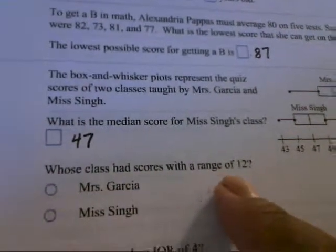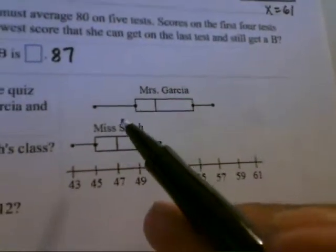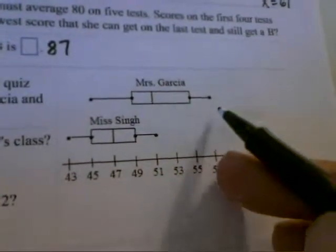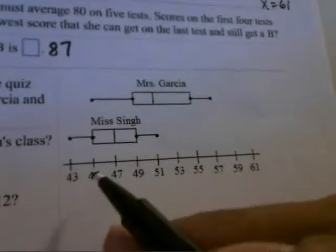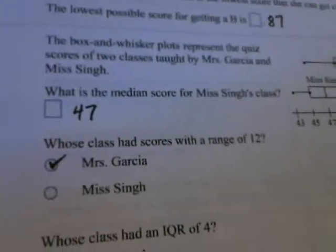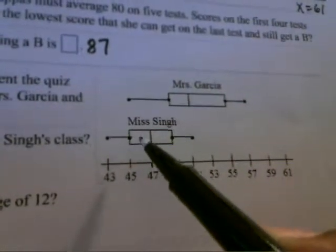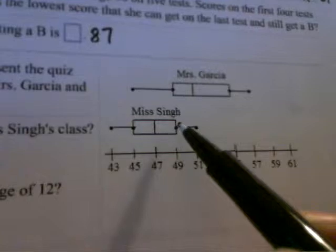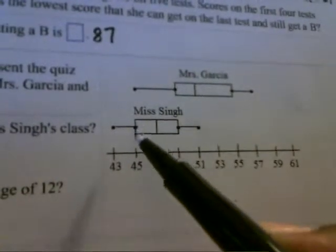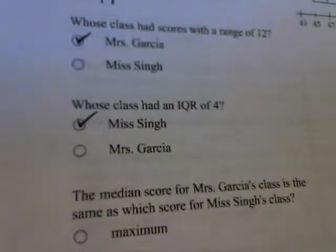Whose class has a score with a range of 12? It will be Ms. Garcia, because the lowest number is 45 and the highest is 57. 57 minus 45 gives 12, so it's Ms. Garcia's class. Whose class has an interquartile range of 4? The interquartile range is always the upper quartile minus the lower quartile. It will be Ms. Singh's class: the upper quartile is 49, the lower quartile is 45, and 49 minus 45 gives 4.